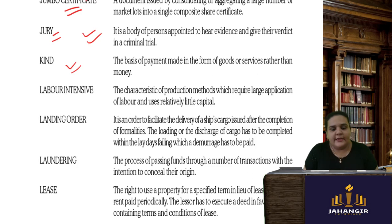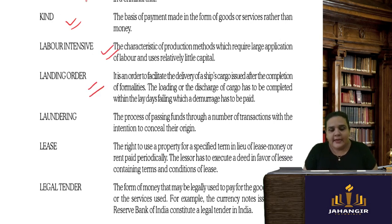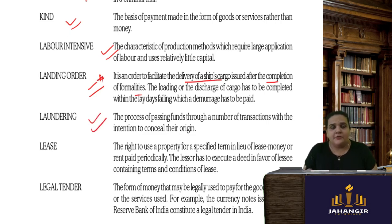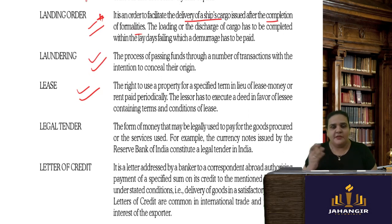Labor intensive refers to those production methods which require intensive labor. A landing order is an order to facilitate the delivery of a ship's cargo, issued after completion of all formalities. Laundering refers to converting black money into white money — concealing the origin of where the money has come from. Lease means taking a property on a long-term rent period, such as 100 years or 50 years — generally government lands are obtained on lease.